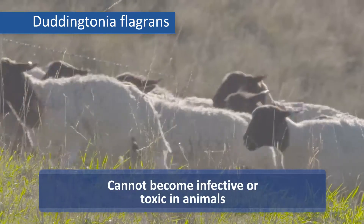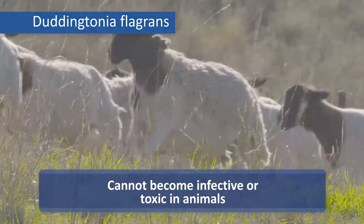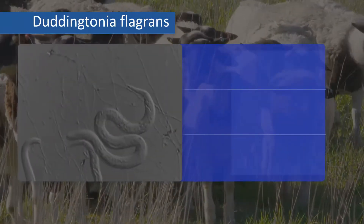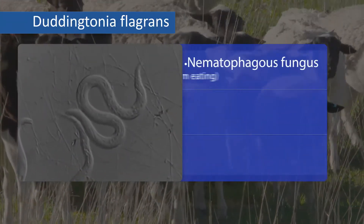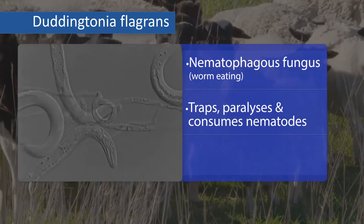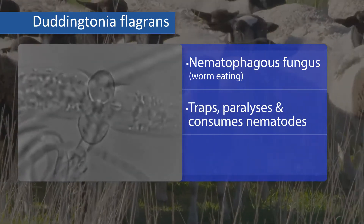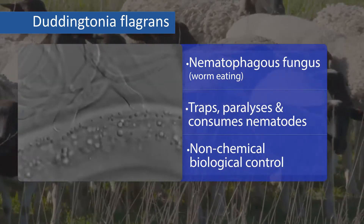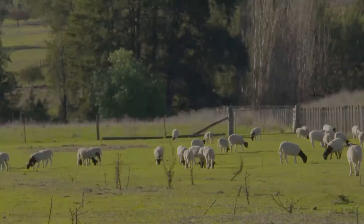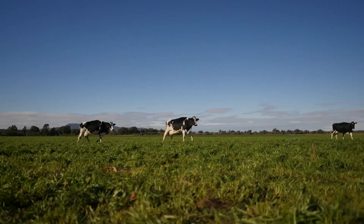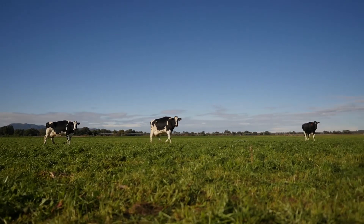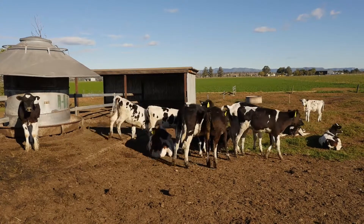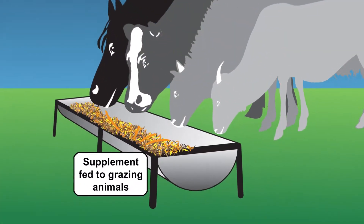It cannot become infective or toxic in warm-blooded animals as the spores do not germinate at 37 degrees or under anaerobic conditions. Duddingtonia flagrans is a nematophagous fungus, meaning that it traps, paralyzes and consumes nematodes. It is a non-chemical biological control for the free-living stages of parasitic gastrointestinal nematodes of grazing animals, which acts by substantially reducing the numbers of infective worm larvae, including multi-resistant larvae, emerging from manure onto pasture.